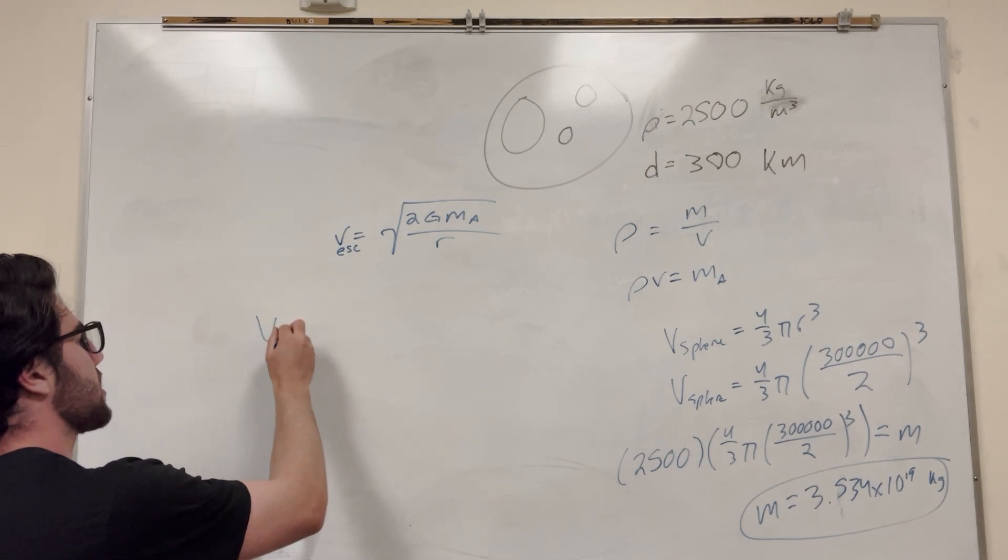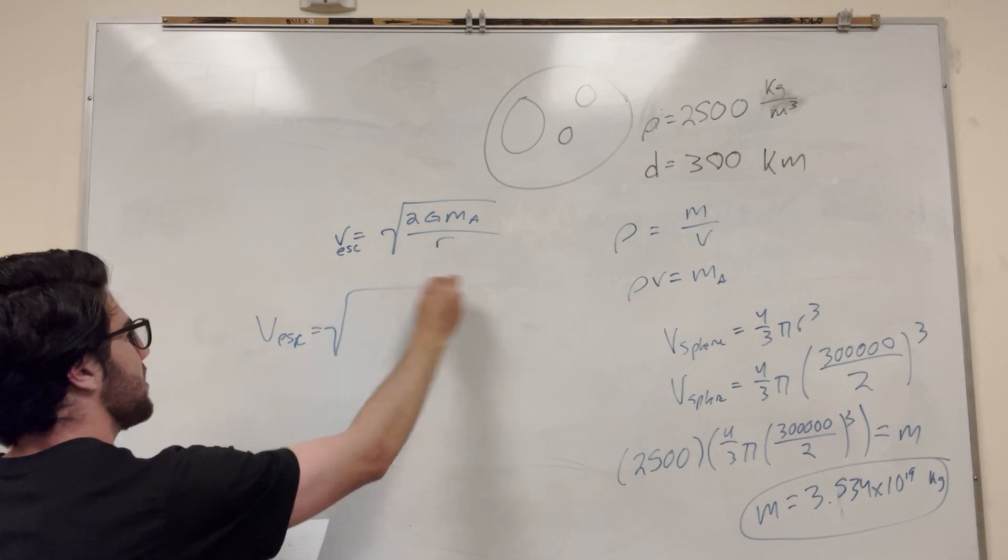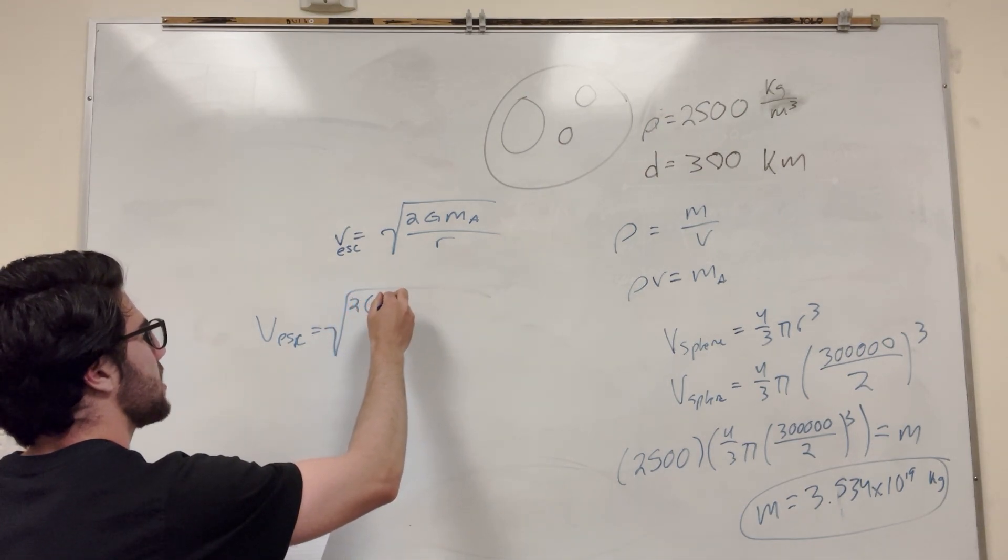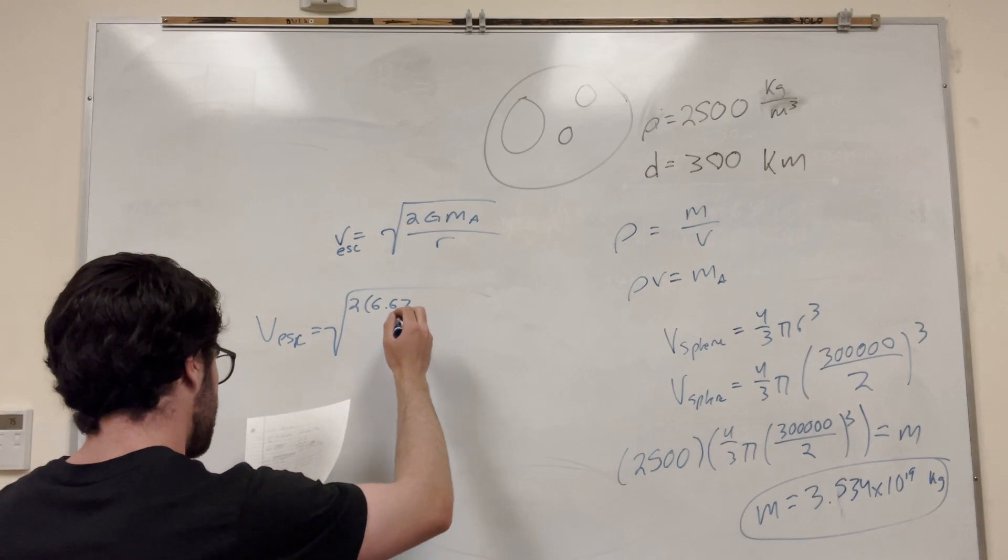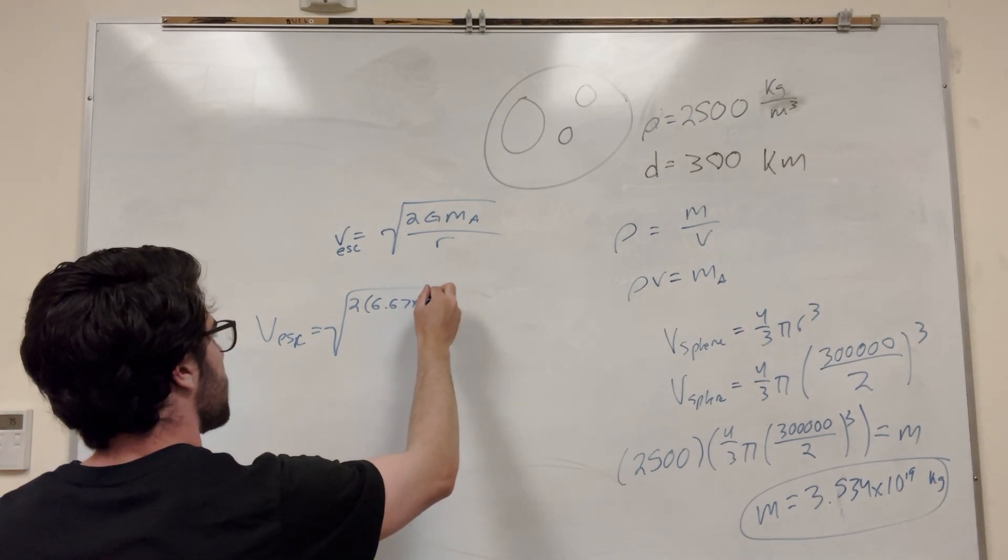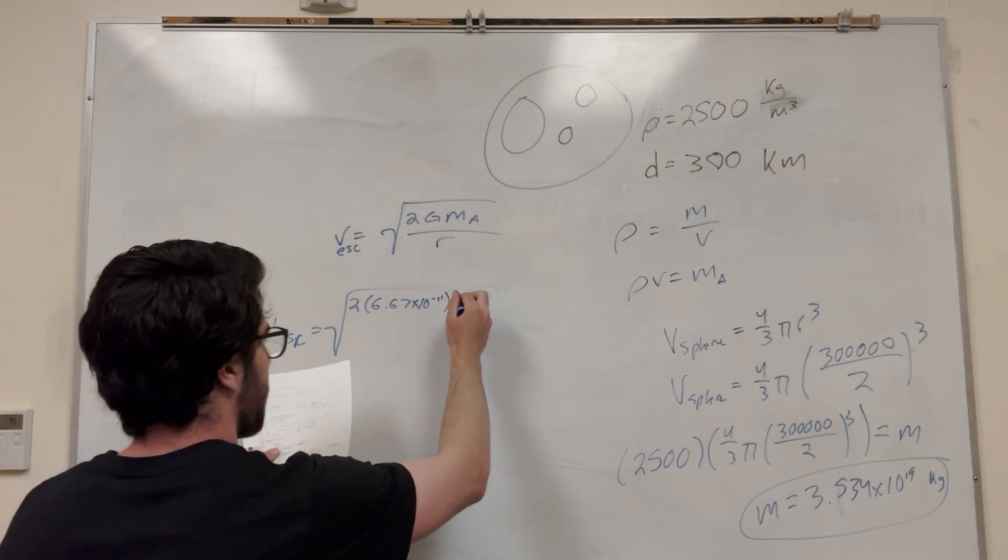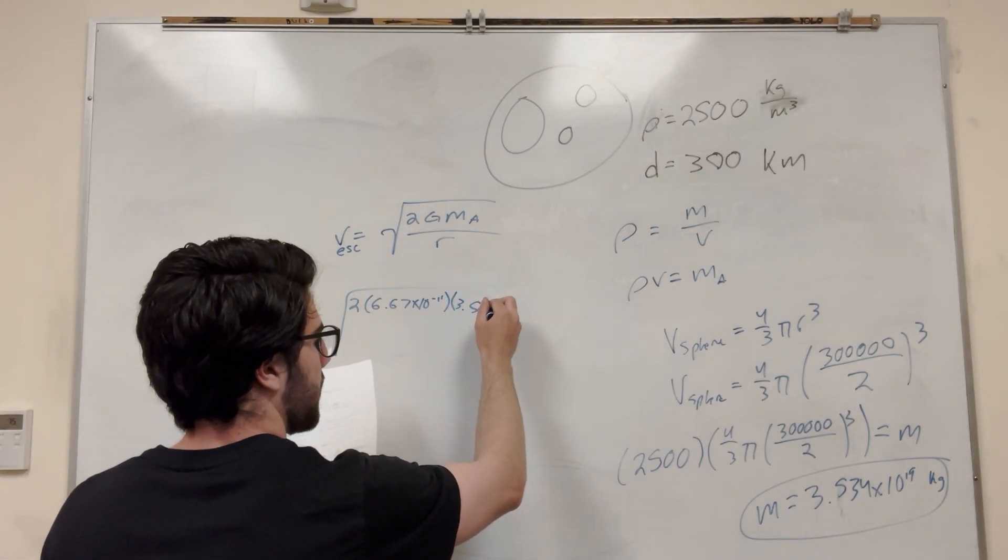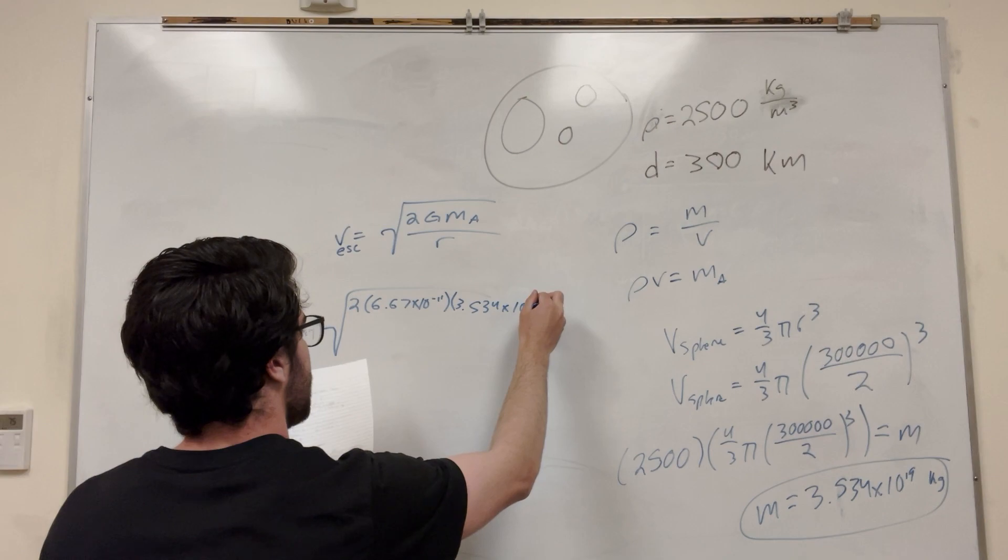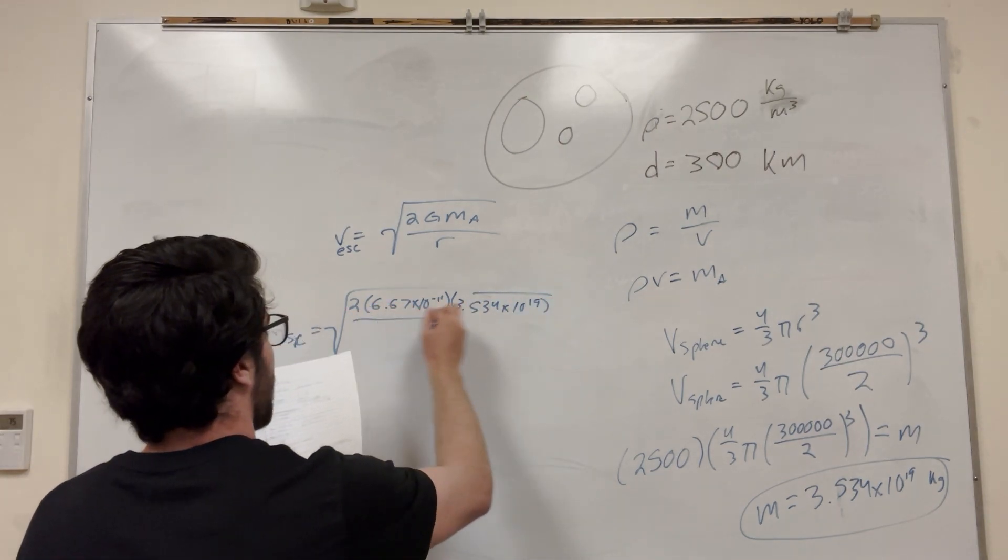So we can just go ahead and say v escape equals the square root: 2, gravitational constant 6.67 times 10 to the negative 11, multiplied by mass, so 3.534 times 10 to the 19, then divide that by radius, which is a big number.